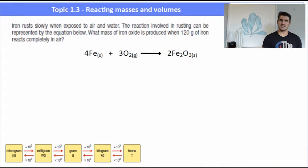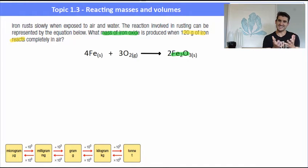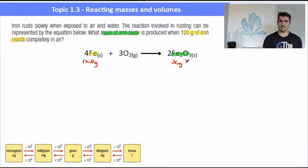The best way to do this is via examples. Iron rusts slowly when exposed to air and water. The reaction involved in rusting can be represented by the equation below. What mass of iron oxide is produced when 120 grams of iron reacts completely in air? The Fe2O3 is the thing we want to find the mass of. We've been given 120 grams of iron, and x grams of iron oxide is what we want to find.